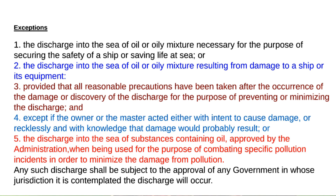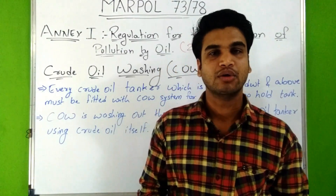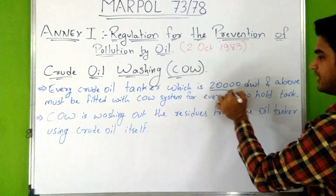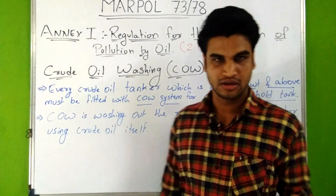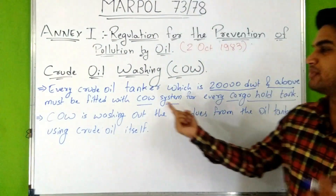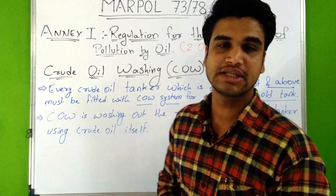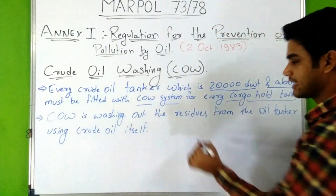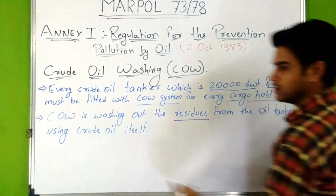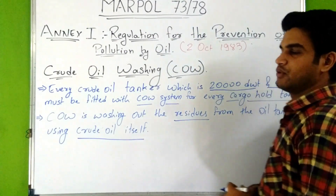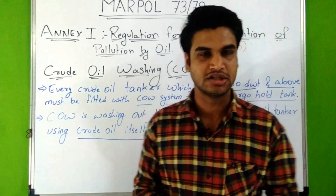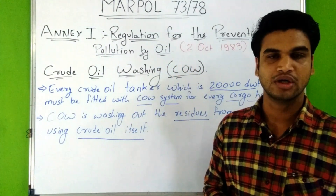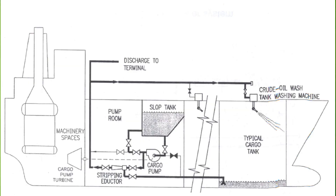Crude oil washing: every crude oil tanker of 20,000 deadweight tonnage and above must be fitted with a crude oil washing system for every cargo hold tank. Crude oil washing is the washing out of residues from oil tanker tanks using crude oil itself. Due to the sticky nature of crude oil, it sticks to the walls of cargo hold tanks after discharge; crude oil is pumped into slope tanks, preheated, and then sprayed on the walls via pressure nozzles.